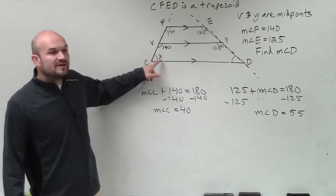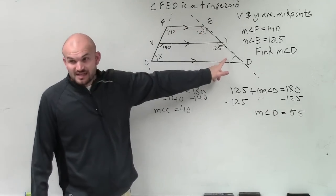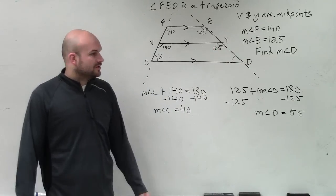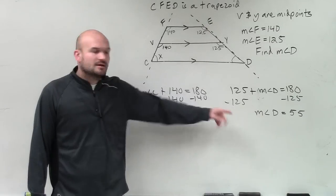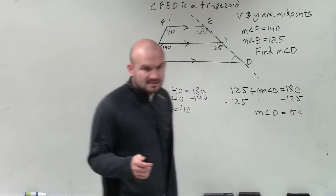So if you already figured this out to be 40, you could say 40 plus 140 plus 125 plus measure of angle D equals 360, and then solve for measure of angle D. That's just another way to do it. But I think this way is pretty simple, right? You didn't have to do this. You just had to do that to figure it out. And that's how you do that problem.